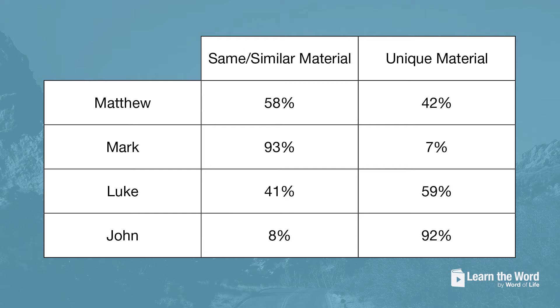The Gospel of John has only 8% of its contents similar or the same as the contents found in the Gospels of Matthew, Mark, and Luke, leaving 92% of it to be unique. This is one of the reasons we believe that the Gospel of John was written last, because John was aware of the Gospels of Matthew, Mark, and Luke, and so John includes details that the other Gospel authors did not.